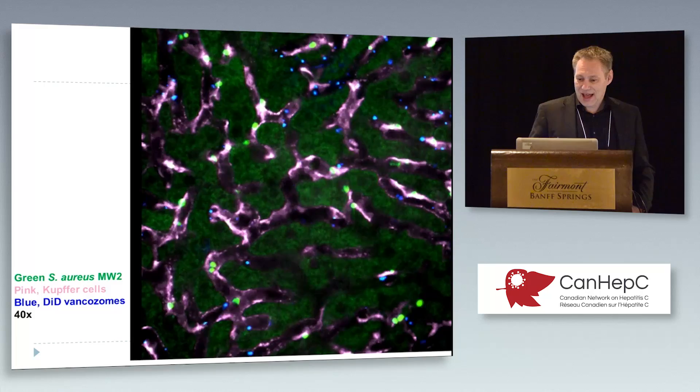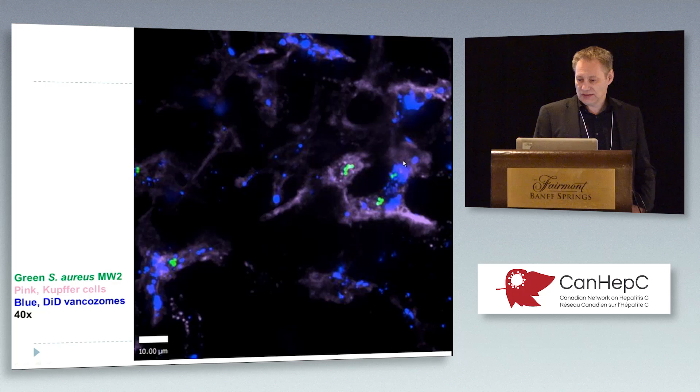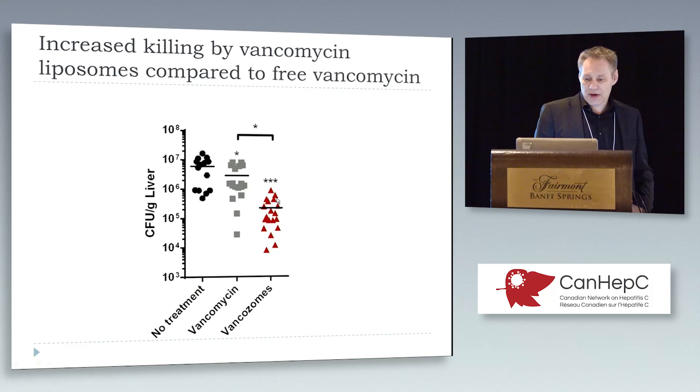The blue vancosomes are being taken up by all of these Kupfer cells. You can see this poor colony of staph not growing very well because of all the vancomycin that's now inside the Kupfer cell. That reduces by an order of magnitude the amount of staph in these mice and actually really helps them not to get killed by the staph.